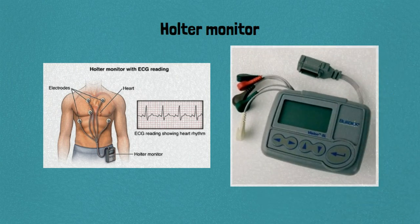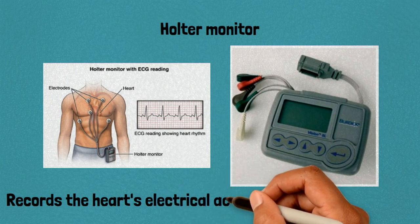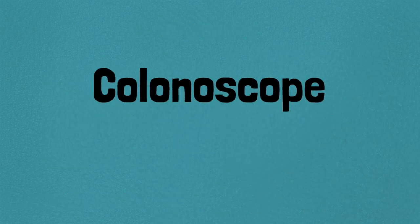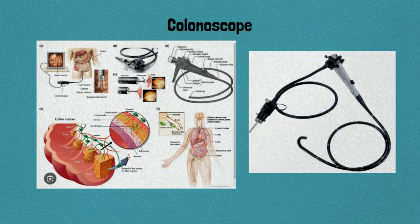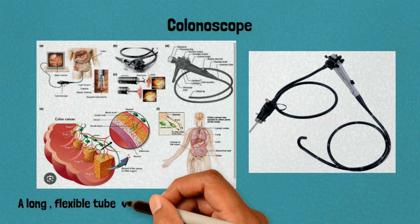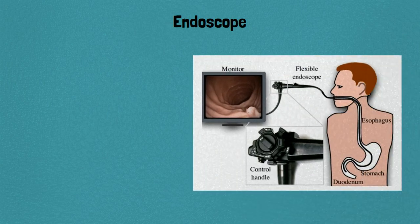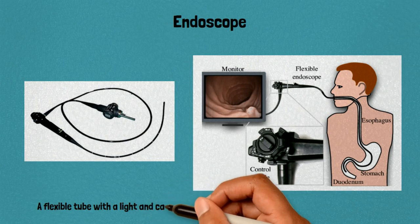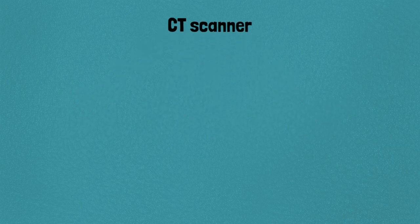15. Holter monitor: records heart activity continuously for an extended period, typically 24 to 48 hours. 16. Colonoscope: a long flexible tube with a camera used for visual examination of the colon. 17. Endoscope: a flexible tube with a light and camera for visualizing internal organs or body cavities.